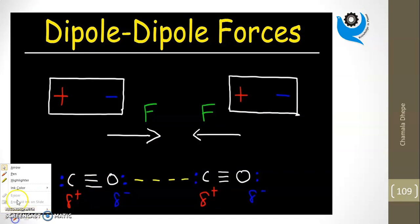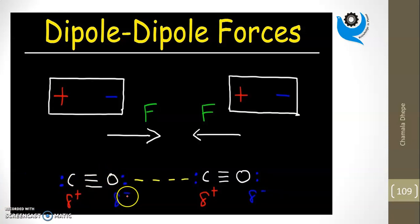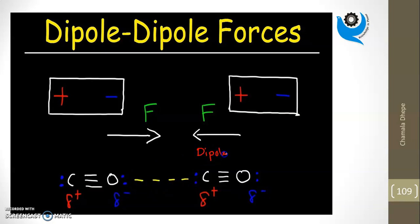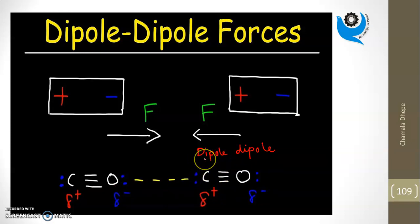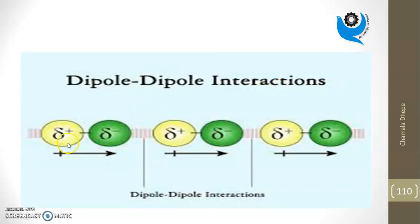In dipole-dipole interaction, both molecules are polar — positive end, negative end, positive end, negative end. When they come together, the attraction is called dipole-dipole interaction. The dotted line represents the dipole-dipole interaction. Remember: in London force, both molecules are non-polar; in dipole-dipole interaction, both molecules are polar.